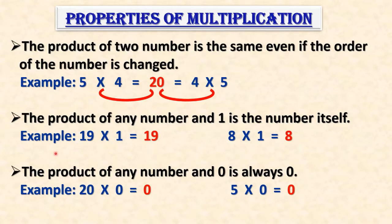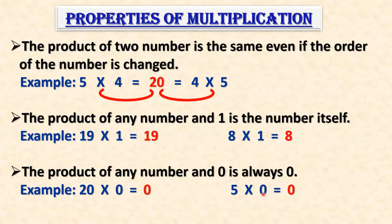Third point: the product of any number and zero is always zero. For example, 20 multiplied by 0 is equal to 0, and 5 multiplied by 0 is equal to 0. No matter how big the number is, whenever it is multiplied by zero, the answer will always be zero.